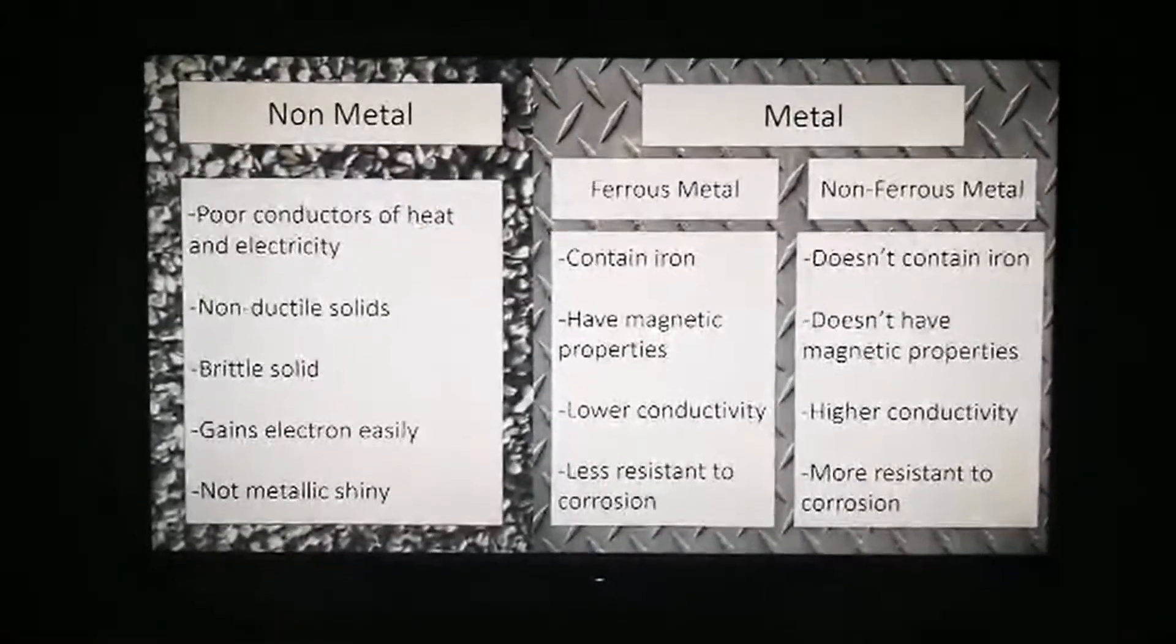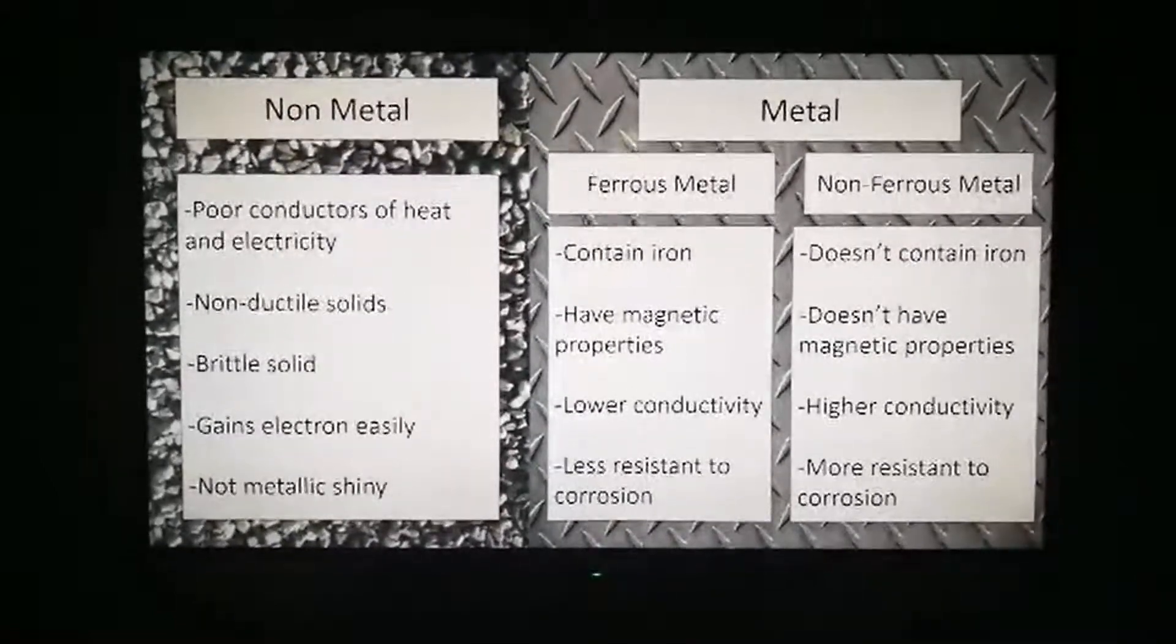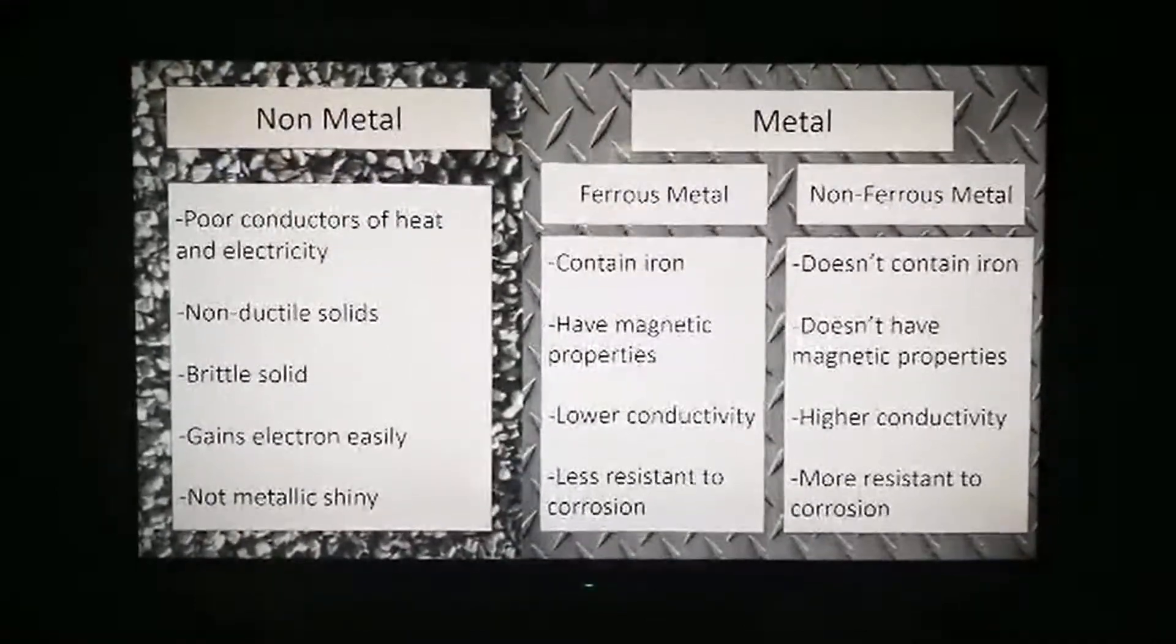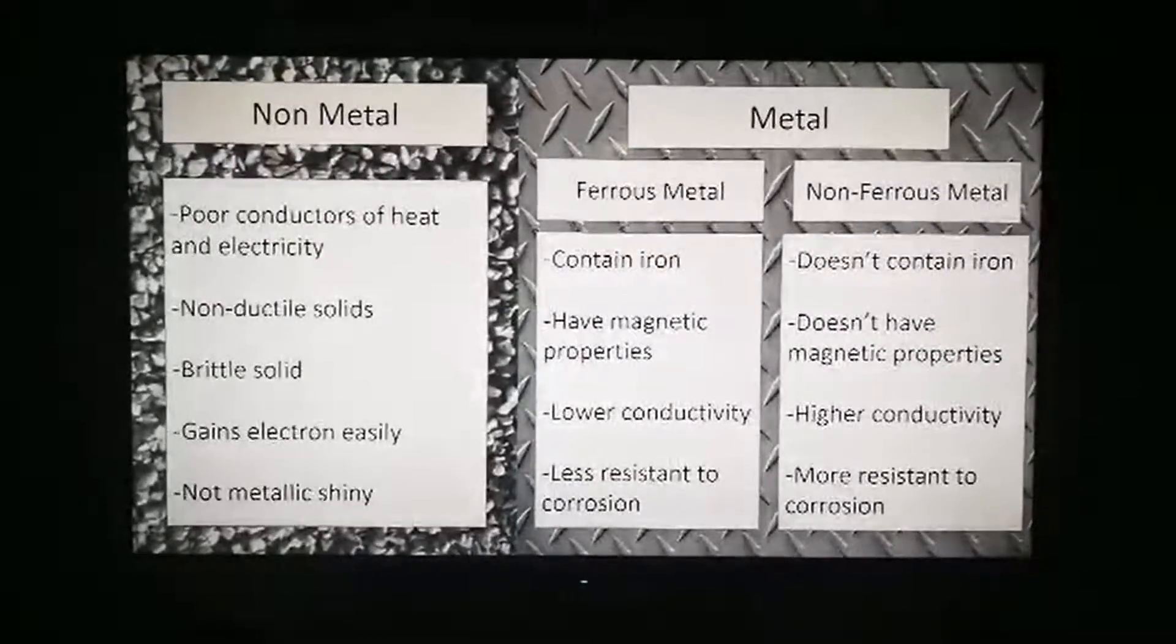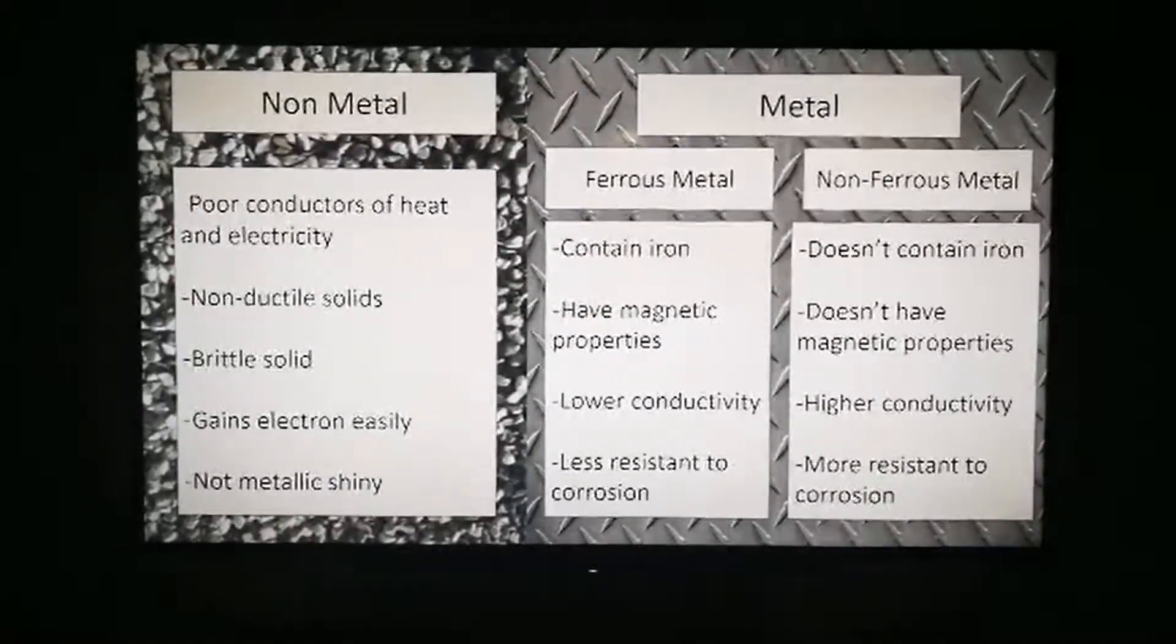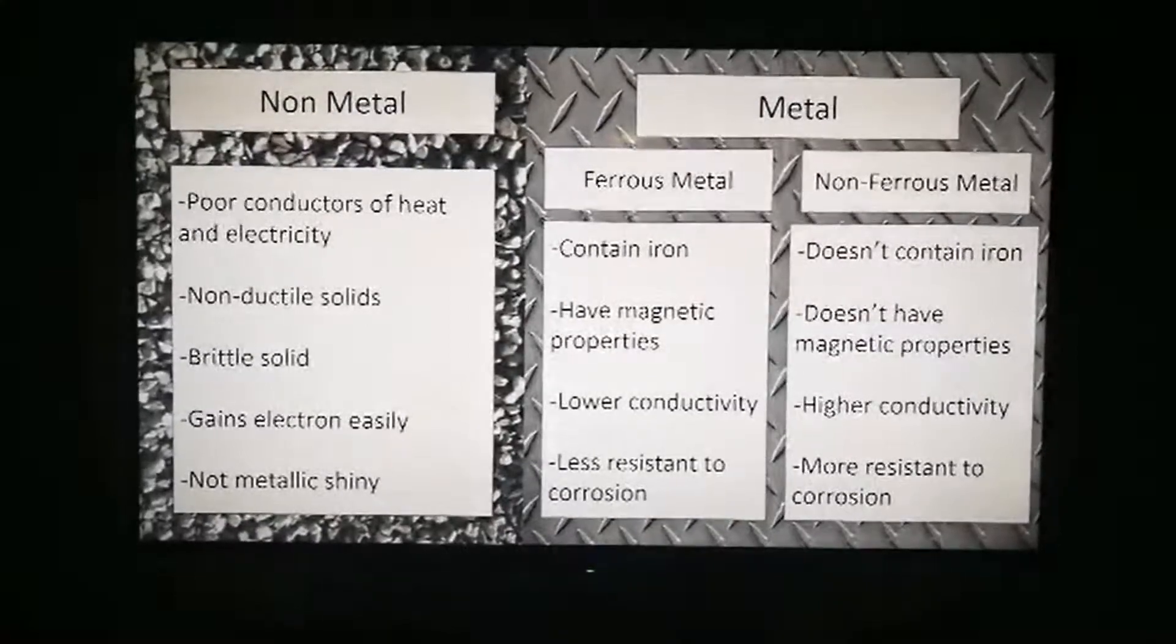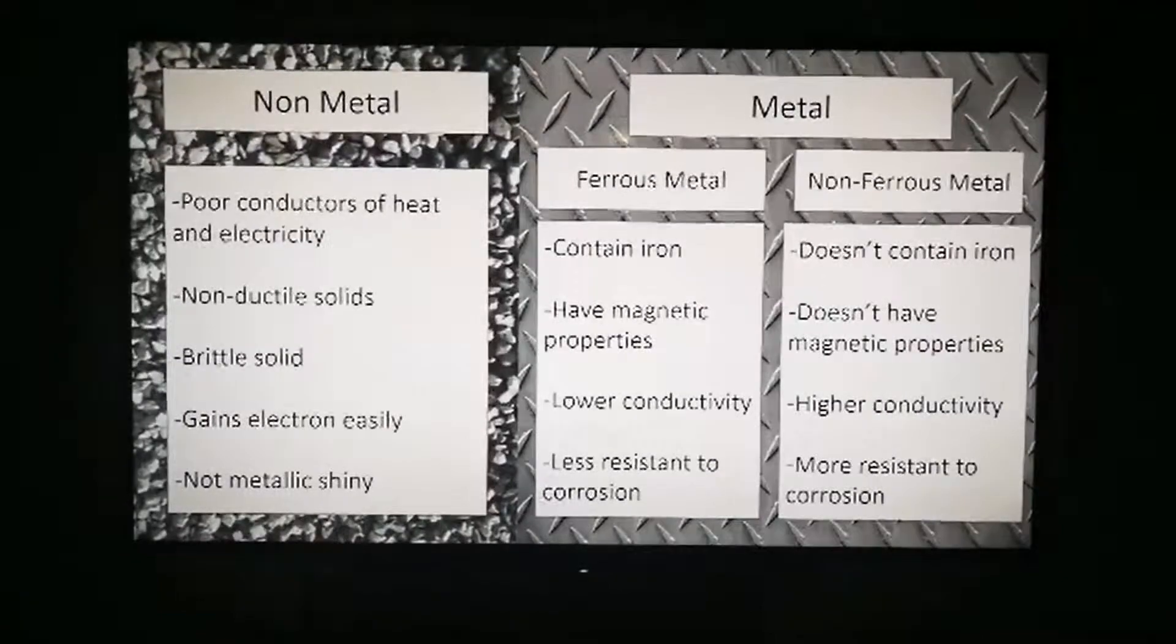So, I'm going to talk about what is non-metal and metal. But I'm going to emphasize more on metal because metal can be differentiated in two types, which is non-ferrous metal and ferrous metal. Non-metal is a poor conductor of heat and electricity. It is non-ductile and brittle solid which is not shiny, so they gain electrons easily. That's all for non-metal.